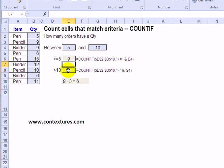And we don't want to count anything where the quantity is greater than 10. Because that's our cutoff point. So another simple COUNTIF looks at that range of cells.